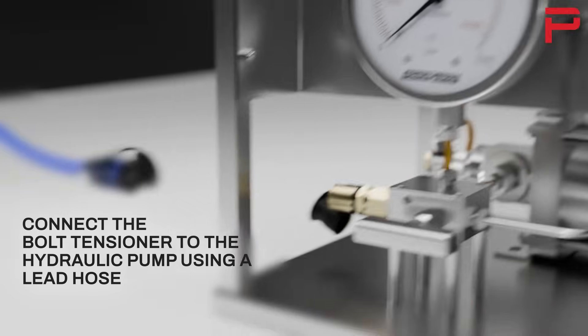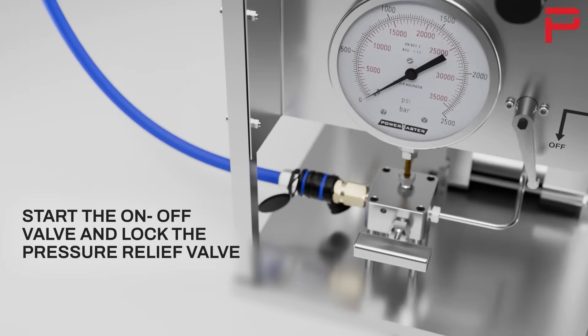Connect the bolt tensioner to the hydraulic pump using a lead hose. Start the on-off valve and lock the pressure relief valve.